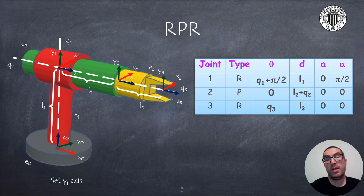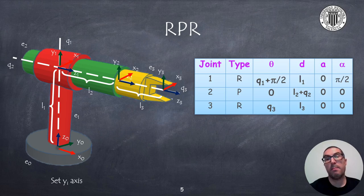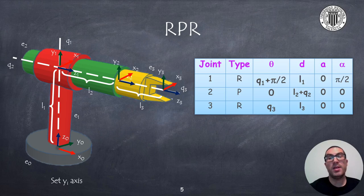In the table I show the Denavit-Hartenberg parameters associated with the transformations between the reference frames. I assume the configuration provided in the figure is the home configuration with all joint values equal to zero. The angle theta is the angle that we must rotate about the Z_{i-1} axis so that X_{i-1} points towards X_i. The quantity d_i represents the displacement along the Z_{i-1} axis, while a_i is the displacement in the direction of the X_i axis. Finally, the angle alpha_i is the rotation around the X_i axis so that Z_{i-1} is aligned with Z_i.